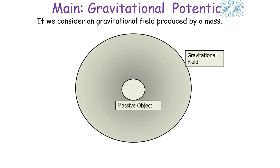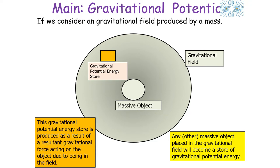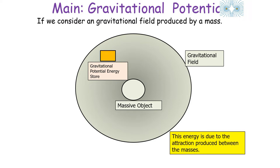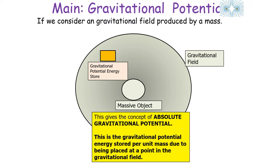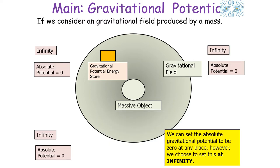Now let's look at gravitational potential. If we consider a gravitational field produced by a mass, any other massive object placed inside the field will become a store of gravitational potential energy, produced as a result of the gravitational force acting on it. This energy is due to the attraction between the masses, giving us the concept of absolute gravitational potential — the gravitational potential energy stored per unit mass due to the object being placed at a point in the gravitational field. We give this quantity the symbol V.